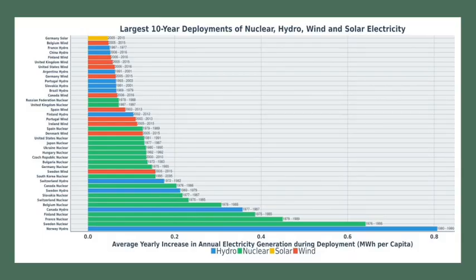A chart showing 10-year deployments of nuclear, hydro, wind, and solar electricity across countries reveals that the most successful single deployment is Norway's hydroelectrics, with a large number of successful nuclear deployments shown in green. Germany's solar and wind both appear on the list but have not been as successful as hydroelectric and nuclear energy in terms of actual clean energy deployment.